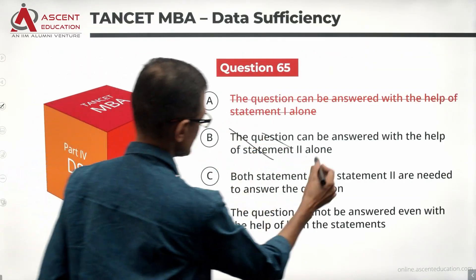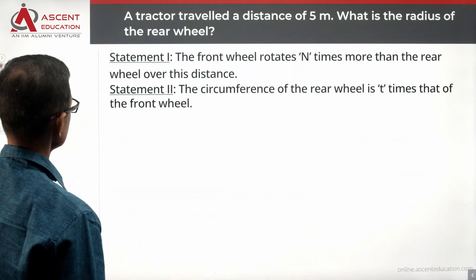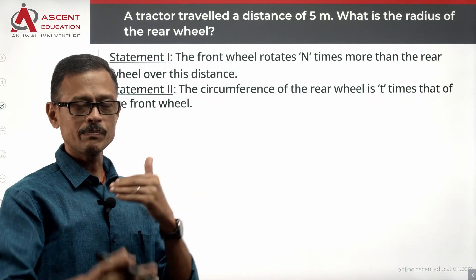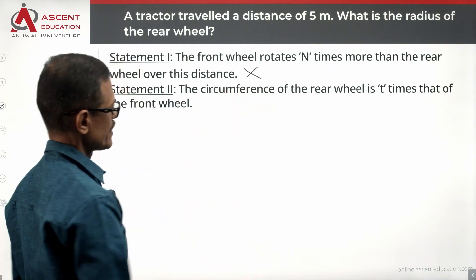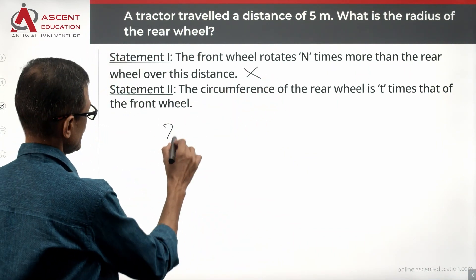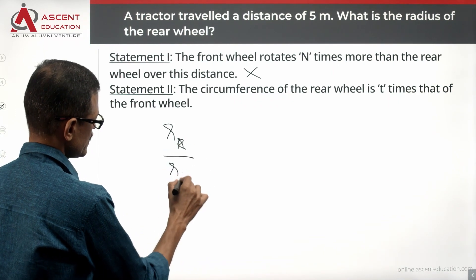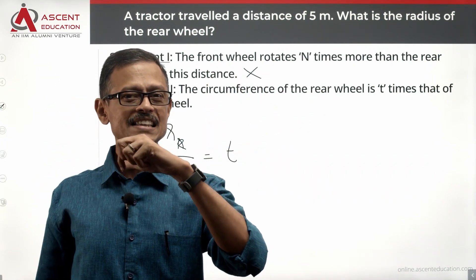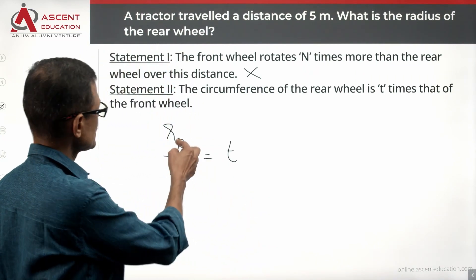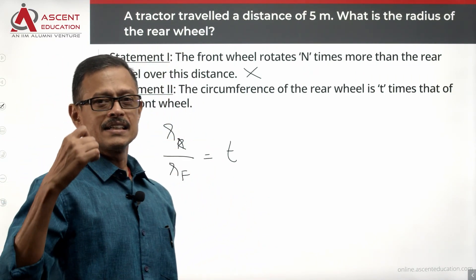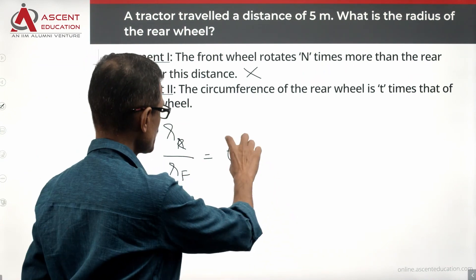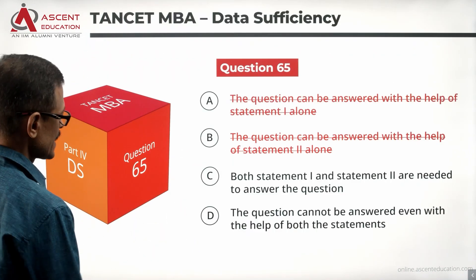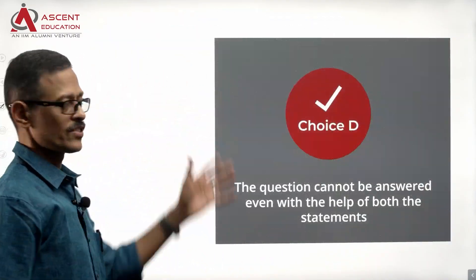Combine the two statements and see whether they give us any help. From Statement 1, the front wheel rotates n times more than the rear wheel. From Statement 2, all we know is that rr divided by rf equals t — we know the ratio of the radii but not the individual values. So even combining both statements, we will not be able to find an answer. Statements together are not sufficient. Eliminate answer option C as well. D is the correct answer to this question.